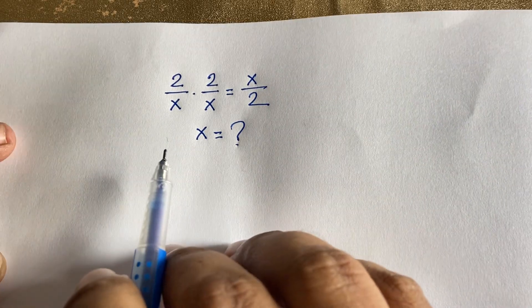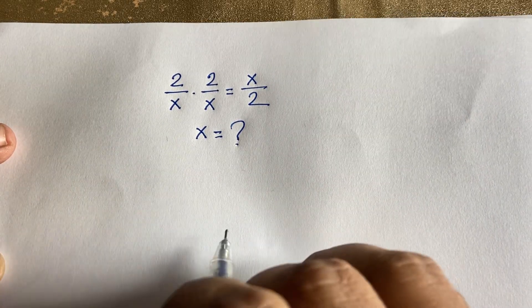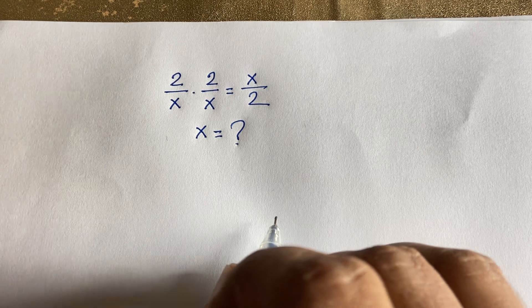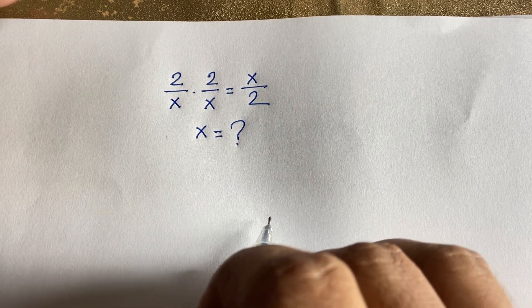2 over x times 2 over x is equal to x over 2. x is equal to what? How to solve this question? It is an interesting maths problem.